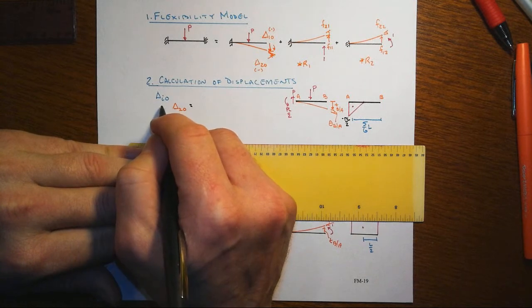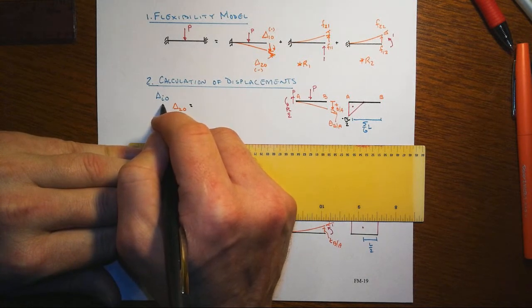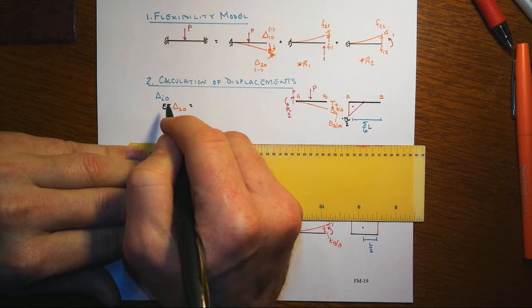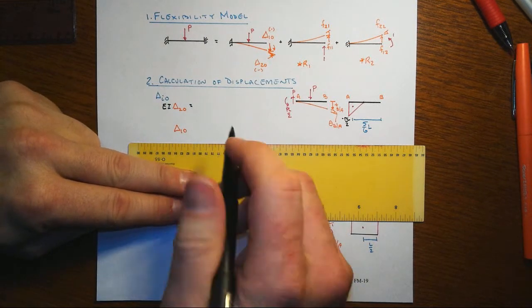Rather than writing M over EI every single time in all the various terms, let's just take the EI over to the other side to make the work a little bit easier.